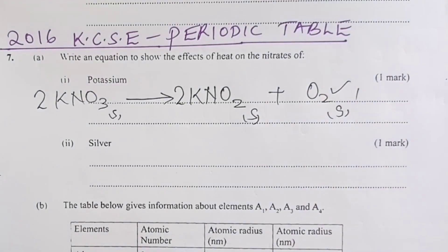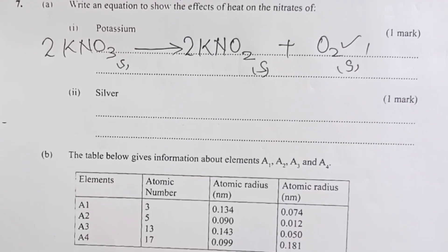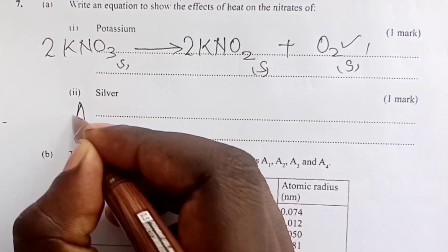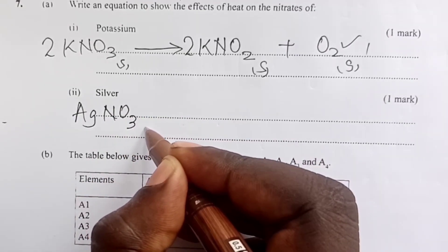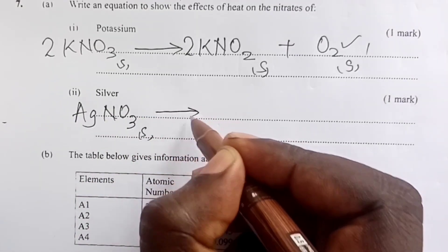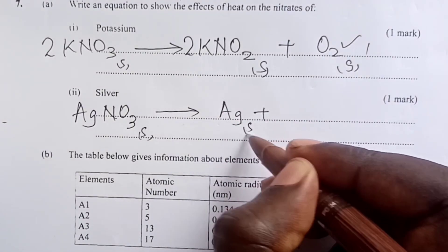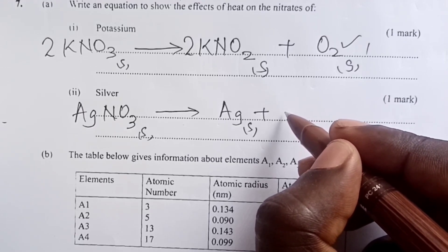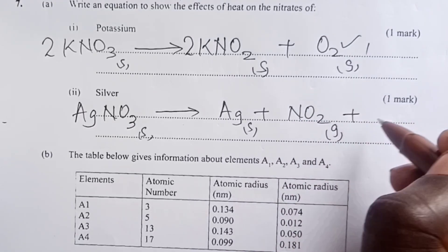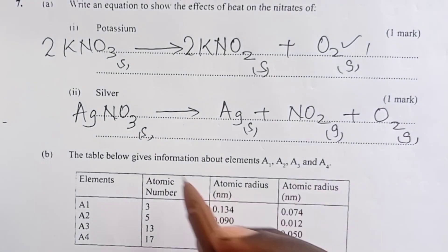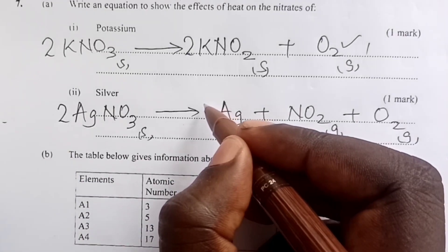Now to the nitrate of silver. Silver is a metal that is very low in the reactivity series, so its nitrate would decompose when heated to give the metal silver, nitrogen 4 oxide gas, and oxygen. Again we balance with a 2 on silver nitrate, a 2 on silver metal, and a 2 on nitrogen 4 oxide for the next mark.